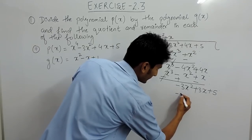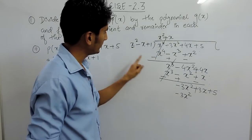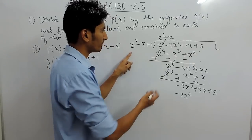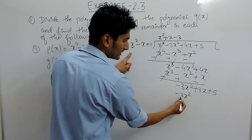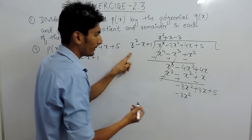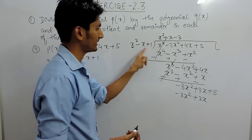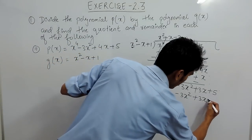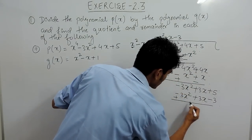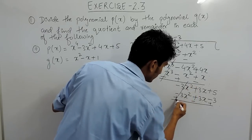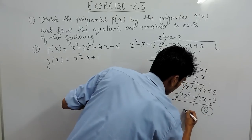Again you have to make minus 3x squared. For that you multiply x squared with minus 3, so minus 3 multiplied by x squared gives minus 3x squared. Minus 3 multiplied by negative x gives plus 3x, because minus minus is plus. And minus 3 multiplied by 1 is minus 3. So again you subtract by changing the signs. This positive becomes negative, this positive becomes negative — so plus plus is plus — and 8 is your remainder.